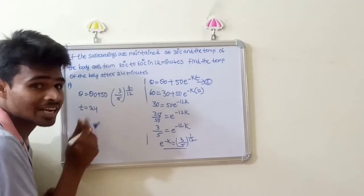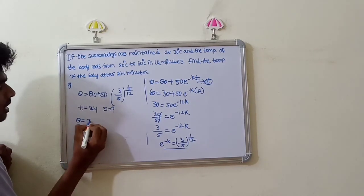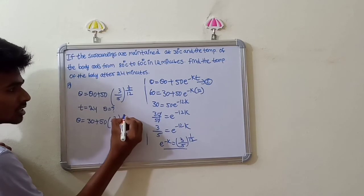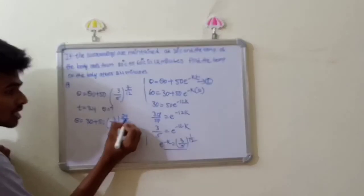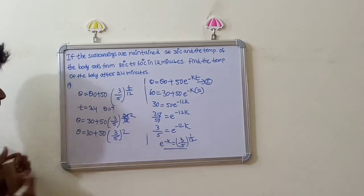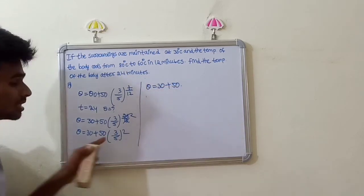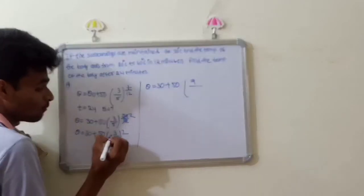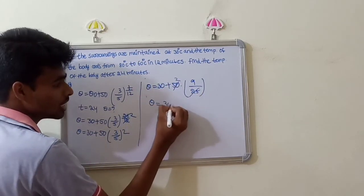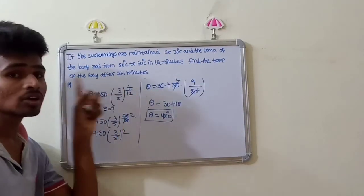For T = 24 minutes, theta = 30 plus 50 into (3/5) whole power 24/12 = 30 plus 50 into (3/5) whole squared = 30 plus 50 into 9/25 = 30 plus 18. Therefore theta is equal to 48 degrees Celsius.